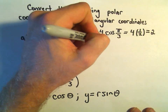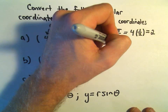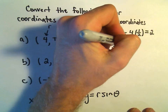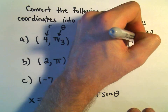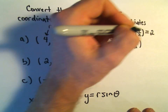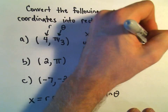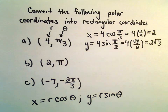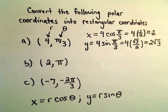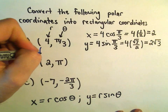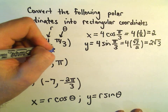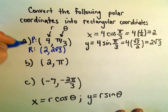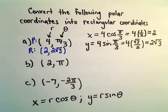The y coordinate will be 4 times sine of pi over 3. Sine of pi over 3 is going to be root 3 over 2, so 4 over 2 is 2 — it looks like we get 2 root 3. So in rectangular coordinates, we would get the point (2, 2√3). That would be the rectangular version of those coordinates given in polar form.